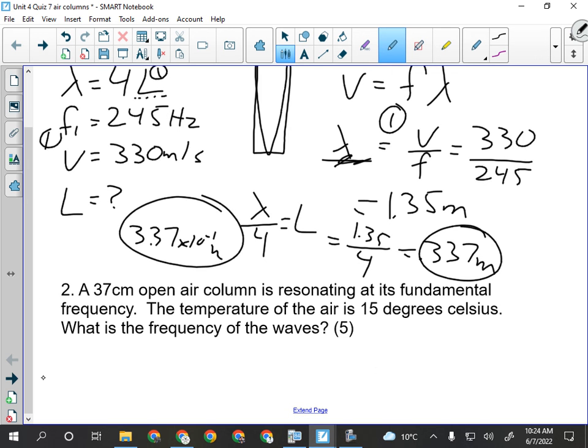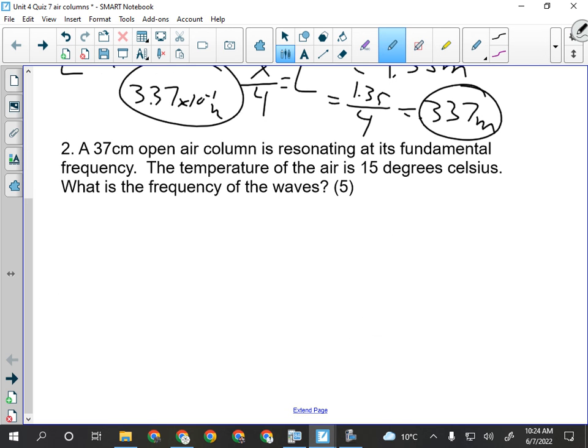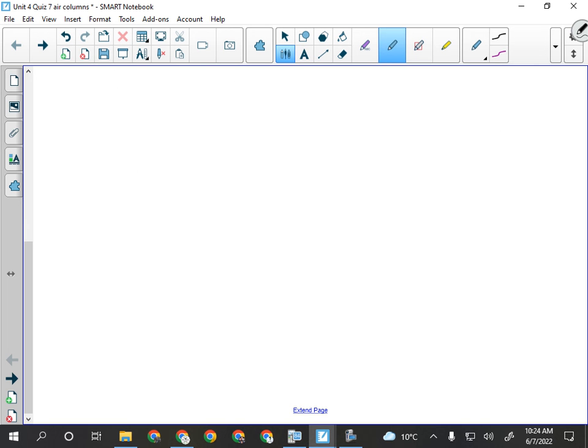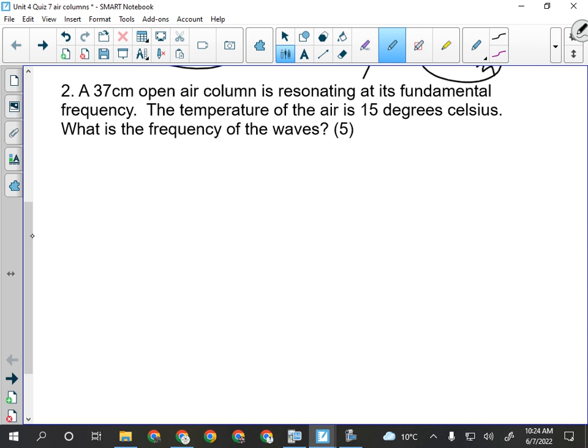Then we've got question number two, which is an open air column. So the first thing I want to write is that lambda equals 2L because they tell me it's open and at its fundamental frequency. They tell me the length of the tube is 0.37 meters and that the air temperature is 15 degrees Celsius. So give them a mark for their givens.